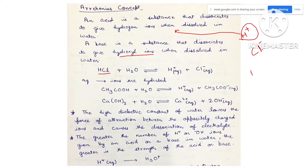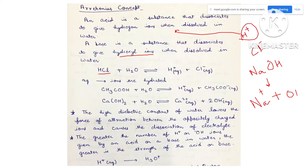For example, NaOH — sodium hydroxide — dissociates as Na positive and OH negative. Since it gives you the OH minus ion, it is a base. The next example is acetic acid. Acetic acid when dissolved in water gives you the H positive ion and CH3CO negative, which is the negative part of this acid.